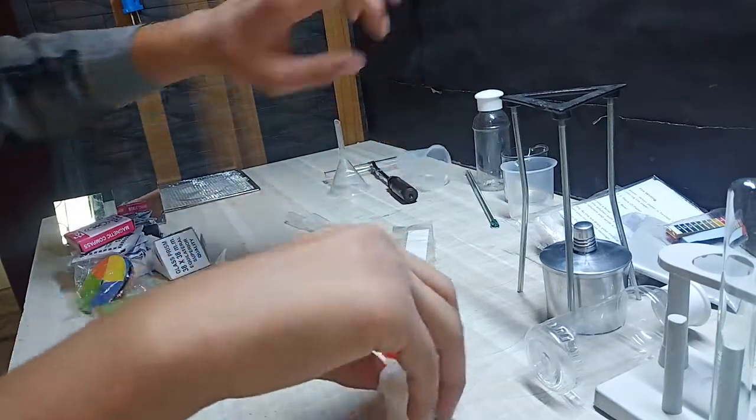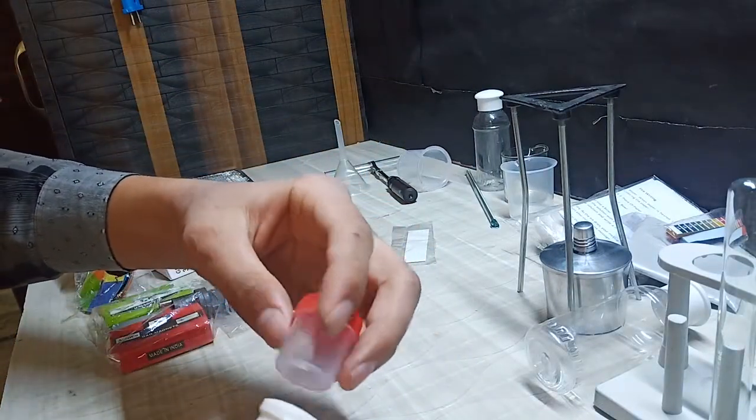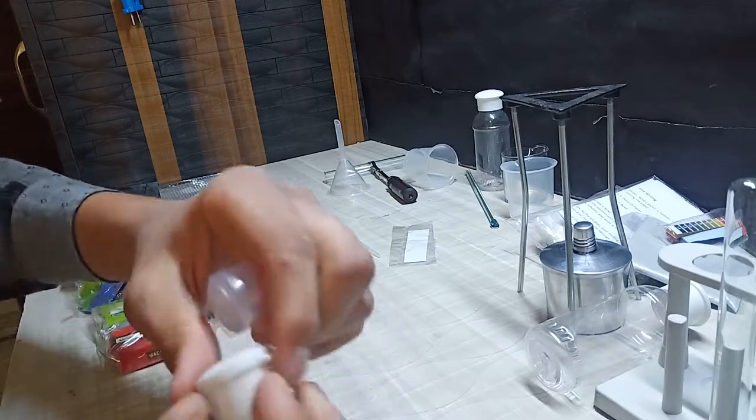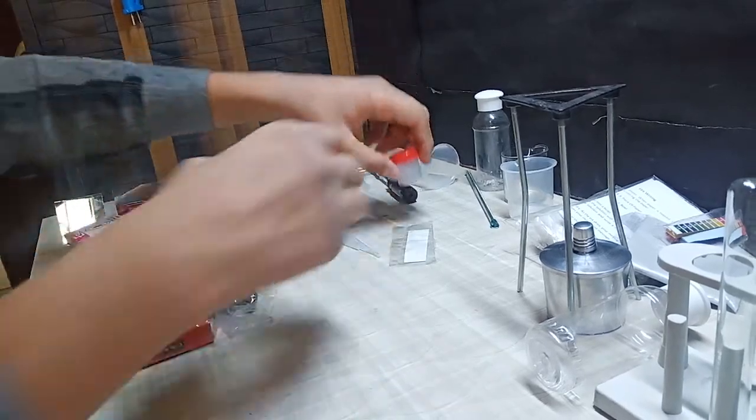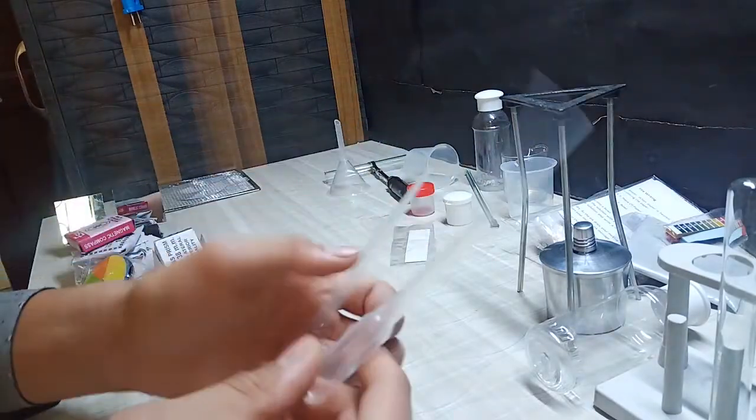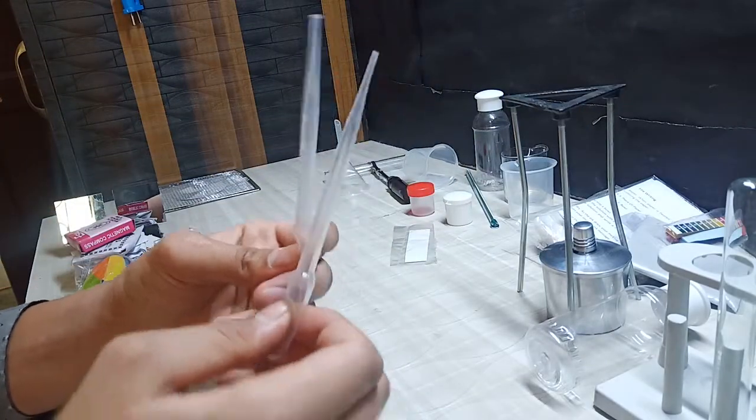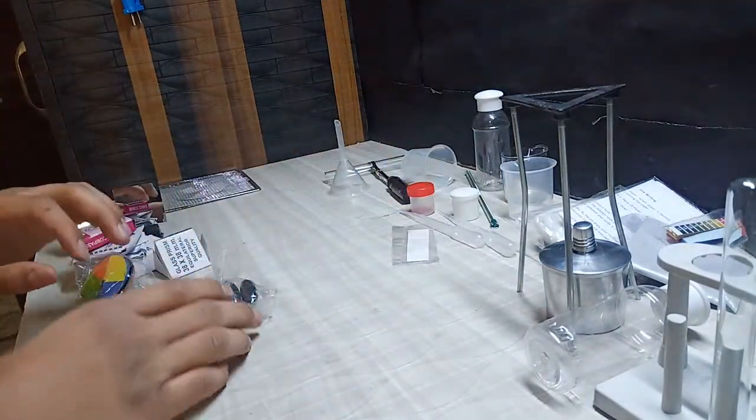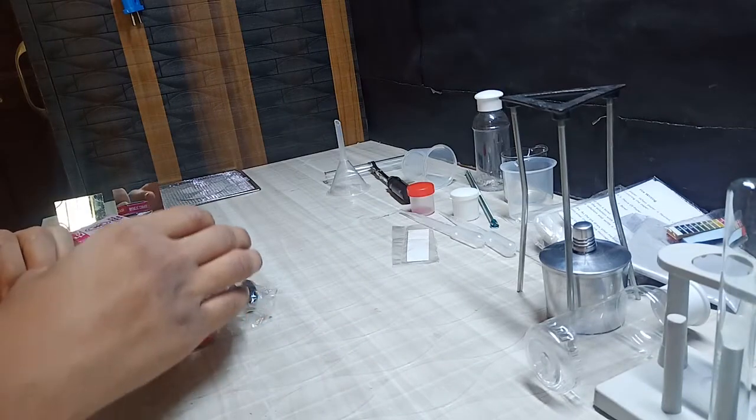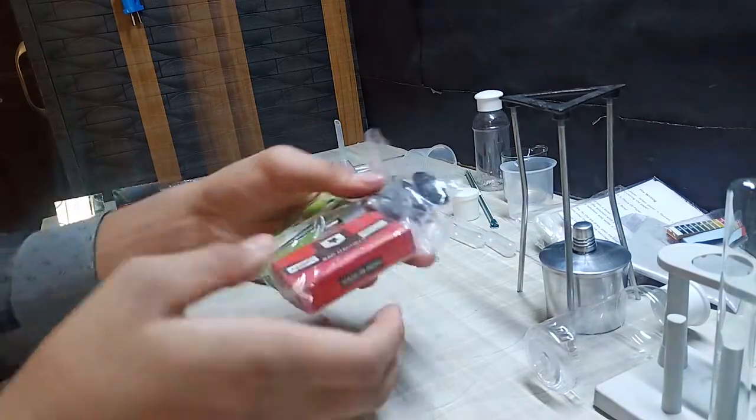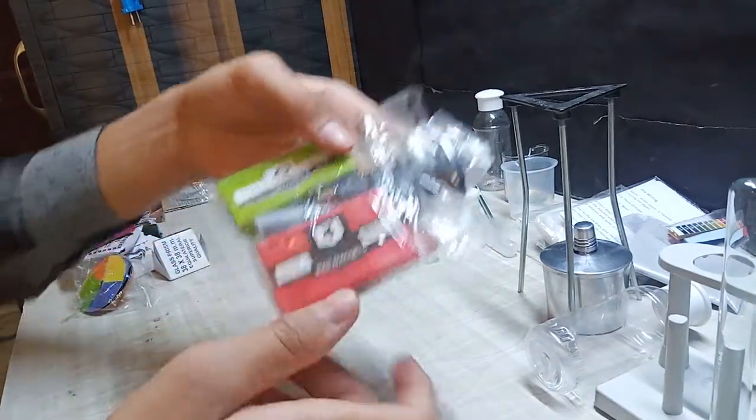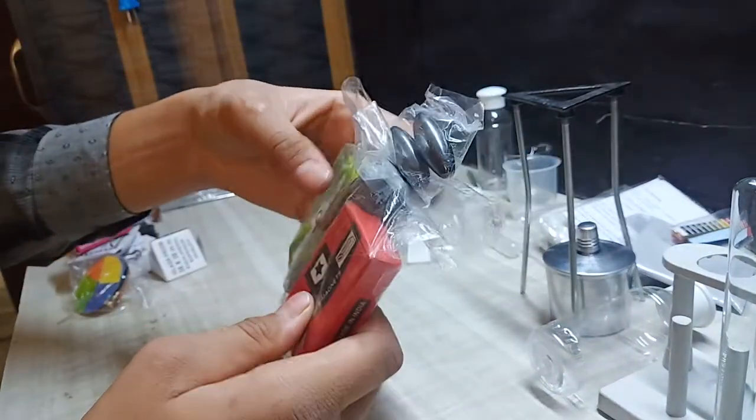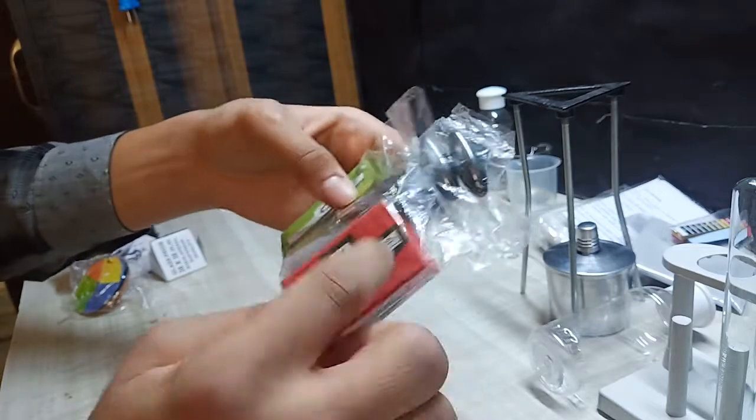These two are containers. These are droppers. Now we are proceeding towards the physics kit. These are some kinds of magnets. It's a combo of chemical and physical kit. The combination includes bar magnet, horseshoe magnet, and some more.